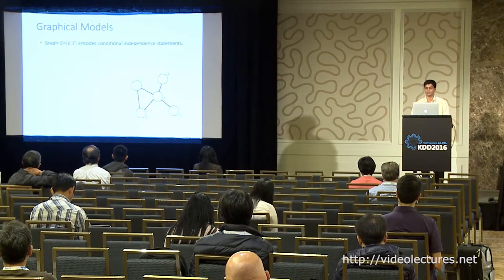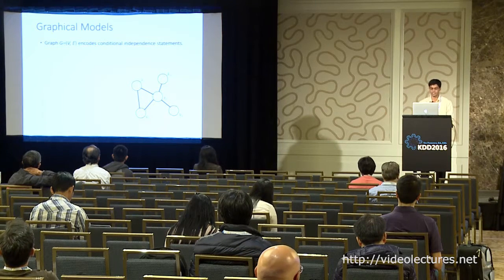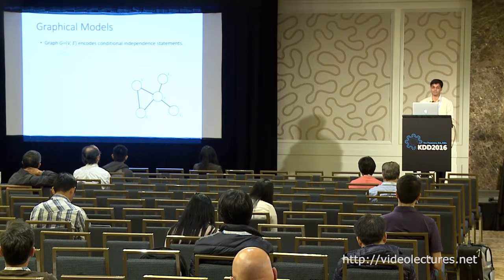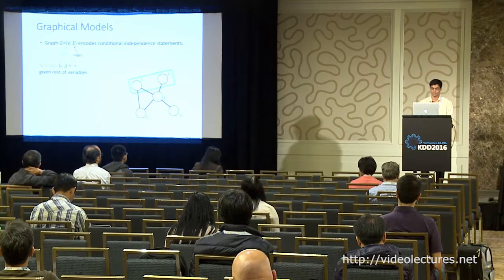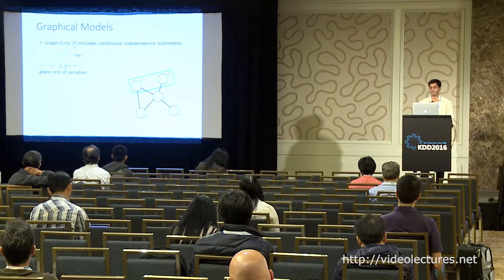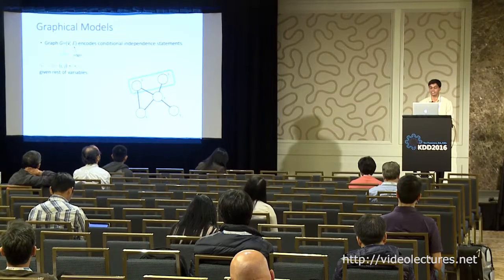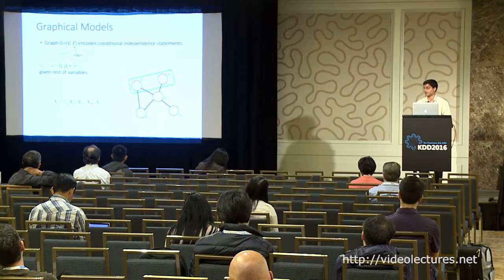Let me start with a quick review of graphical models. A graphical model consists of a set of nodes corresponding to random variables and a set of edges indicating conditional independence relationships between those variables. Specifically, if there's no edge between nodes i and j in the graphical model, then the random variables x_i and x_j are conditionally independent given the remaining variables.